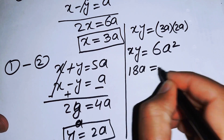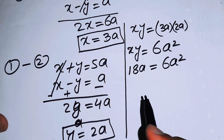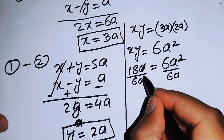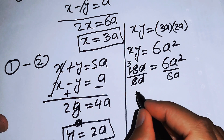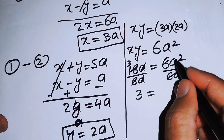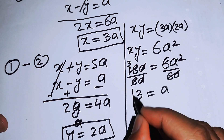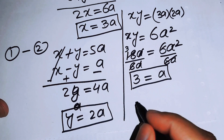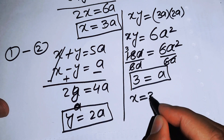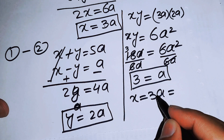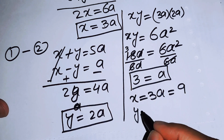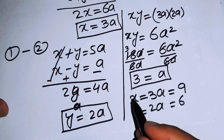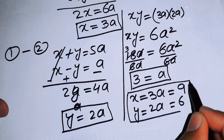We divide both sides by 6a. The a terms cancel, and 18 divided by 6 gives 3, so the value of a equals 3. Substituting back: x equals 3a equals 3 times 3 equals 9, and y equals 2a equals 2 times 3 equals 6.